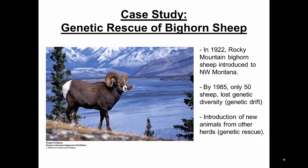Before we go into Hardy-Weinberg, I want to take a brief moment and talk about a case study dealing with population genetics. If you're into ecology you may have heard of this example before — it's a classic example. In 1922, the Rocky Mountain bighorn sheep were introduced to northwestern Montana. Their populations expanded, but as time went on, by 1985 only about 50 sheep were left in this population.